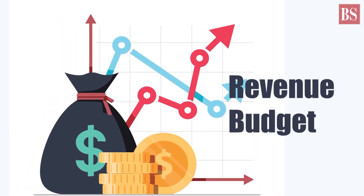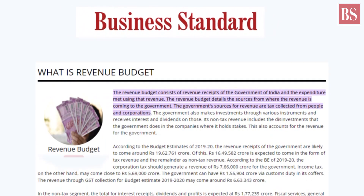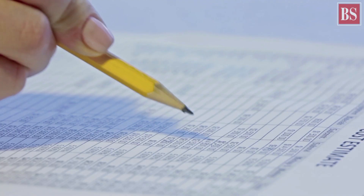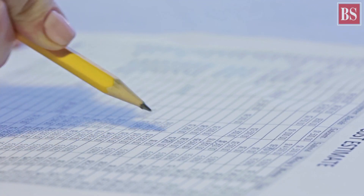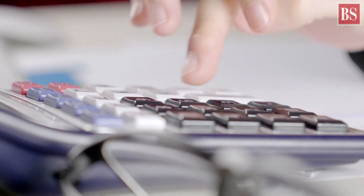The revenue budget consists of the Government of India's revenue receipts and the expenditure that is met using said revenue. It gives the details of the sources from where the government's revenue is coming.